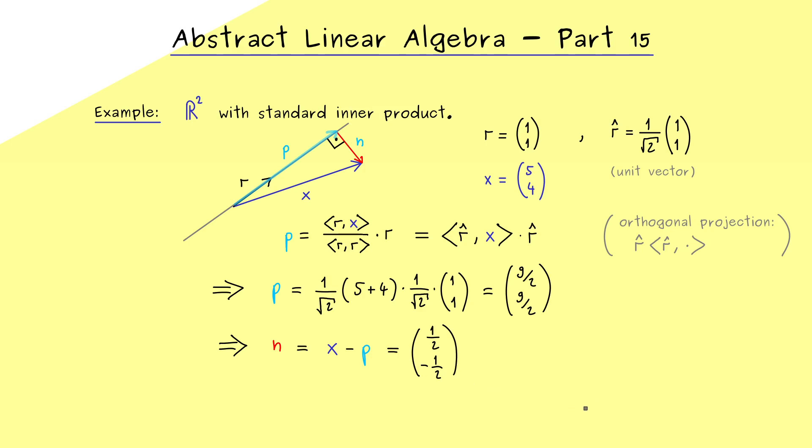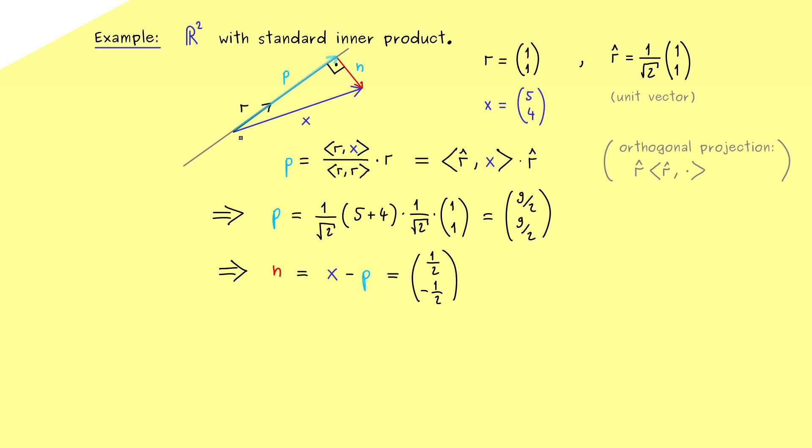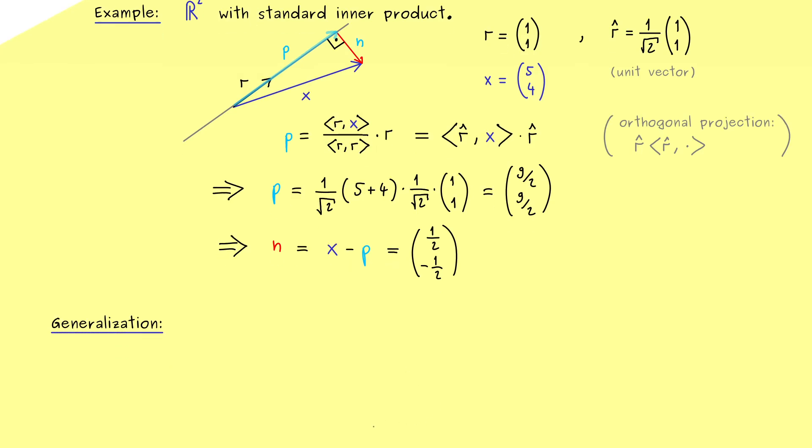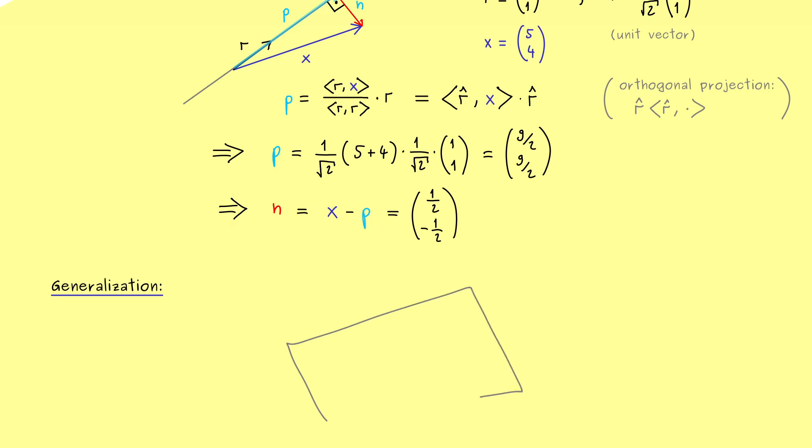Therefore the natural question is can we generalize the whole thing to a higher dimensional subspace. So what is the best idea to get such a generalization? So maybe let's first sketch such a subspace in two dimensions. So instead of a line, now we have a subspace u here. And maybe let's say it's a plane in R³. Therefore a general vector x in the vector space could look like this. And now you can see we want to have the same thing. We want to have one component p inside the subspace and one component n that is orthogonal to u.